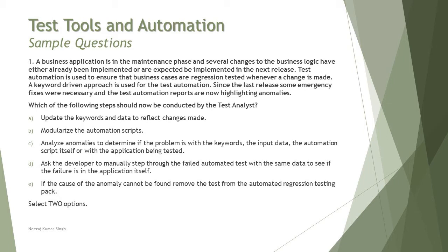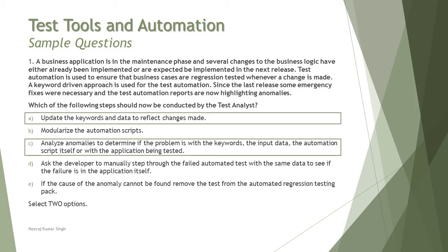Option D is to ask the developer to manually step through the failed automated test with the same data to see if the failure is in the application itself. A developer does not have the responsibility to manually go through the failed tests — it is the responsibility of the test analyst. Option E is to remove the test from the automated regression testing pack if the cause of the anomaly cannot be found. That is not a good principle or practice in testing. Therefore, the right answer for this question is A and C: update the keywords, and analyze the anomalies to determine where the problem exists.